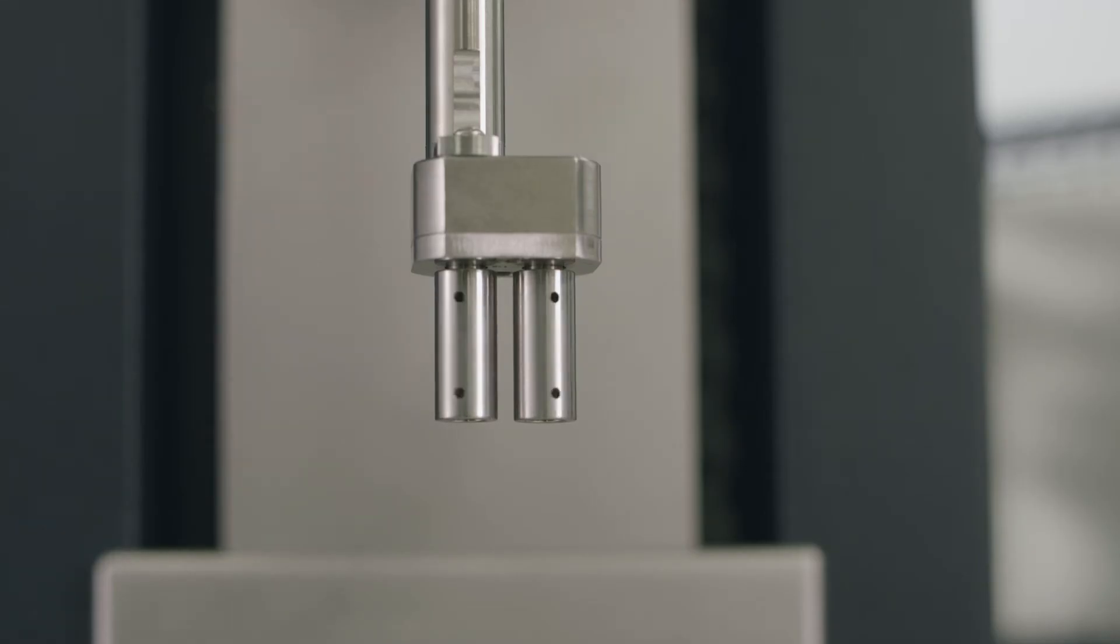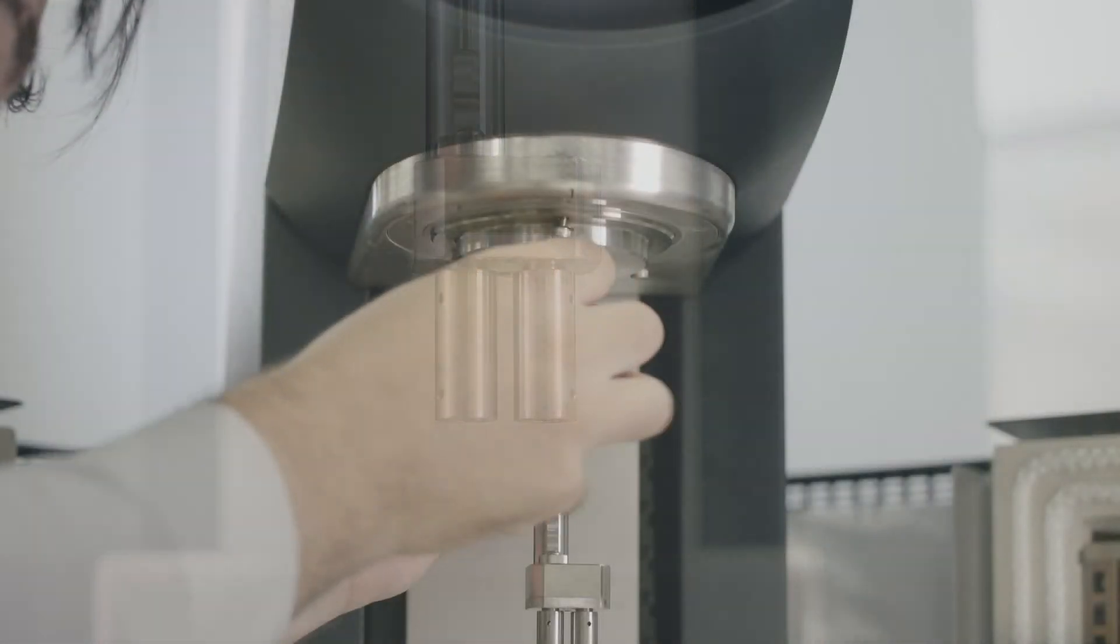Check that the sample drums spin freely when turning the shaft and that the mounting bracket sits flush against the instrument. Secure the EVA mounting bracket to the rheometer using the three screws.